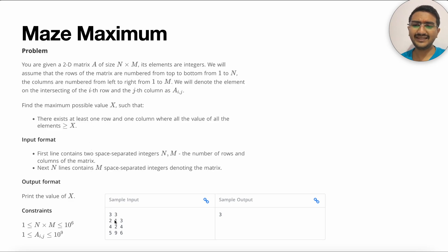So the constraints were pretty simple as well. n times m will not cross 10 to the power 6 and each element is of the order 1 to 10 to the power 9. So by seeing this you should consider that each element is a long.